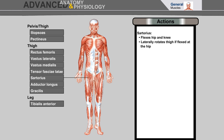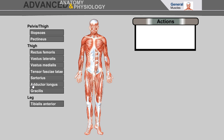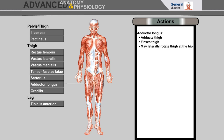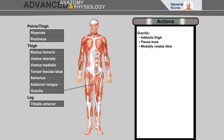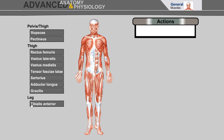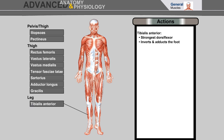Sartorius flexes the hip and knee, and laterally rotates the thigh if flexed at the hip. Adductor longus adducts the thigh, flexes the thigh, and may laterally rotate the thigh at the hip. Gracilis adducts the thigh, flexes the knee, and medially rotates the tibia. Tibialis anterior: strongest dorsiflexor, inverts and adducts the foot.